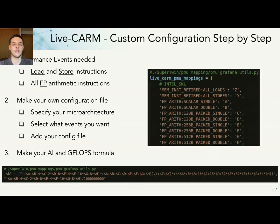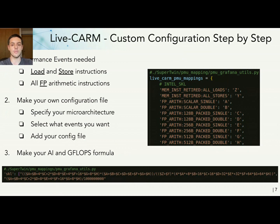Then you will need to make your own Arithmetic Intensity and Gigaflops formula, which can be tricky and will depend on the events you have. You will need to know very well what kind of events you are looking at, because you'll need to calculate a lot of things. In my example, you list all your events, assign each a letter to make the formula easier to write, and then insert your formula: the AI formula on top for the x-axis, and the Gigaflops formula on the bottom for the y-axis. This is how you can do your own Live CARM.